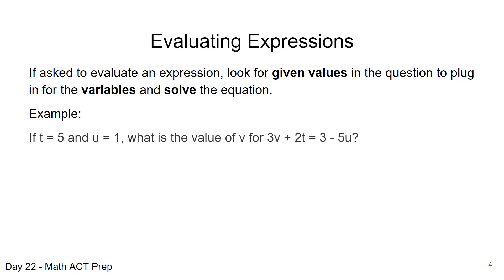So let's take a look at this example. If t equals 5 and u equals 1, what is the value of v for 3v plus 2t equals 3 minus 5u? So we're given this algebraic equation with three different variables v, u, and t, and it tells us at the very beginning of the question that we're going to plug in t equals 5 and u equals 1 and we want to know what the value of v is.